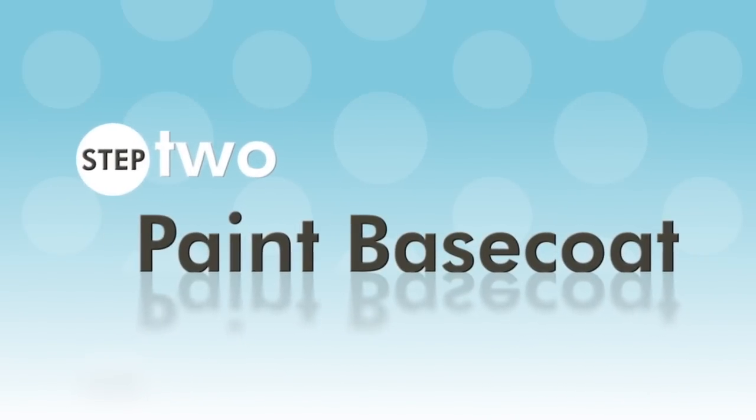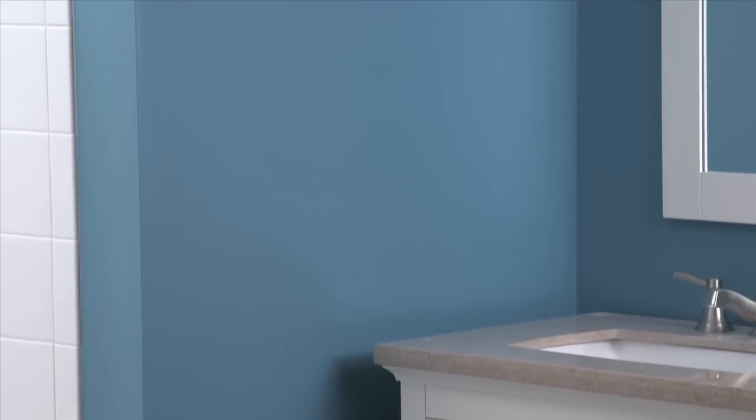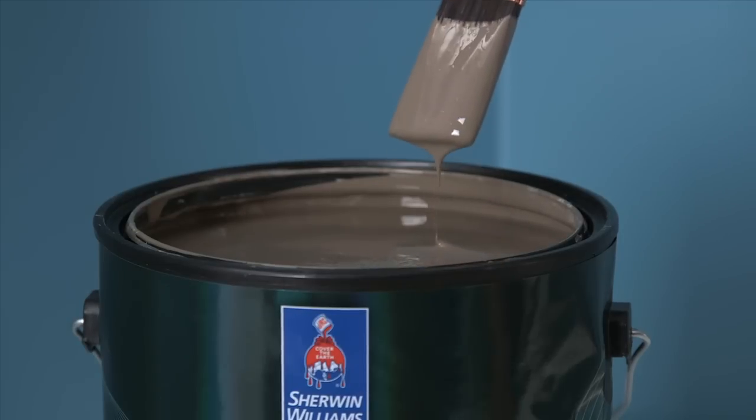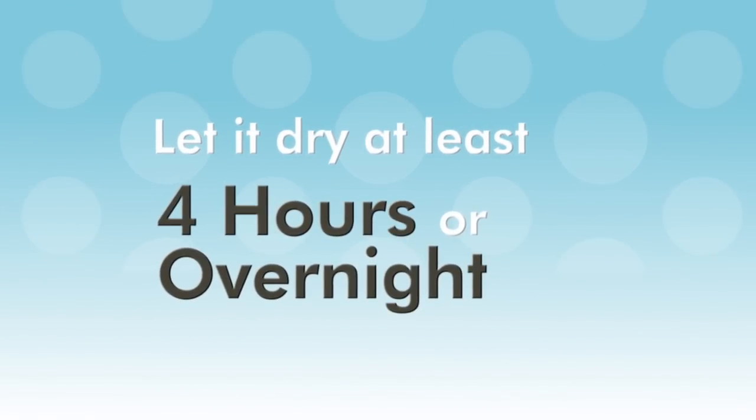Step 2: Paint the base coat. You can use your existing wall color as the base coat or apply a new color. If you apply a new color, let it dry for at least four hours or overnight for best results.